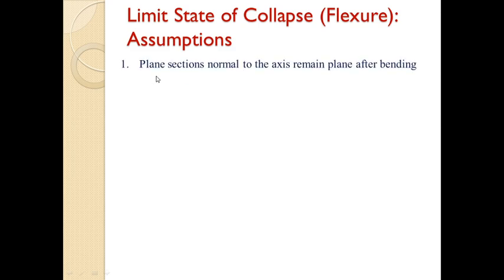We will look at the different assumptions we have to take into consideration while designing a flexural member. The first assumption is: plane section normal to the axis remains plane after bending. This assumption ensures that the cross section of the member does not warp due to the applied loads. It further means that the strain at any point on the cross section is directly proportional to its distance from the neutral axis — that is, the strain is uniform in both the compression zone and the tension zone.